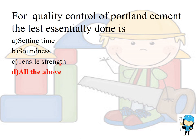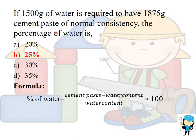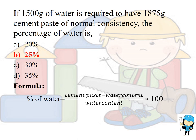The tensile strength test determines the strength of the cement. If 1500 grams of water is required to have 1875 grams of cement paste of normal consistency, the percentage of water is calculated as: (amount of cement paste minus amount of water) divided by water content, multiplied by 100. That is (1875 minus 1500) divided by 1500, multiplied by 100, giving a water percentage of 25%.